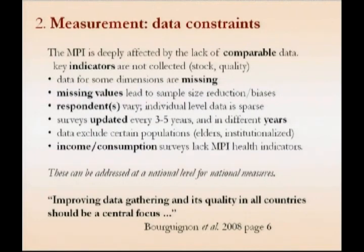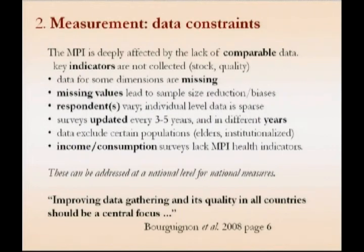To signal up front, one of the challenges of this exercise are data constraints, and just to highlight them because they affect the results: data for some indicators are missing, and the missing values in some surveys have led to sample size reductions. We've done bias analysis where the sample sizes are less than 87%. Respondents vary across the different countries and surveys, and individual level data is very sparse.